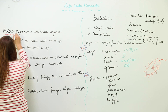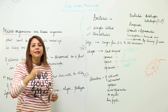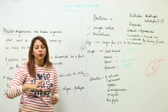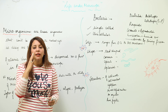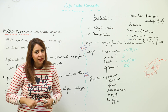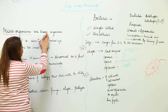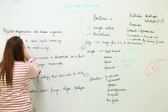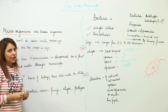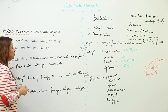Microorganisms — 'micro' means very small — are the tiniest organisms. They are so small that we cannot see them with the naked eye. Microorganisms are those which cannot be seen with the naked eye, the reason being they are too small in size.